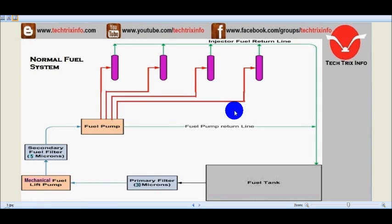In a normal fuel system, the components are a fuel tank, a primary filter of 30 micron, a mechanical fuel lift pump, a secondary fuel filter of 5 micron, and a fuel pump. From the fuel pump, the high pressure lines are connected directly to each injector. There are return lines from the injectors and from the fuel pump as well. That's a normal fuel system.